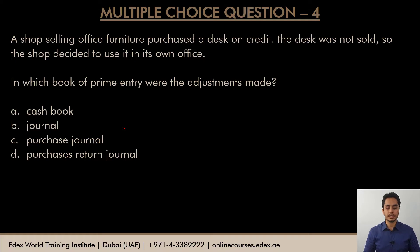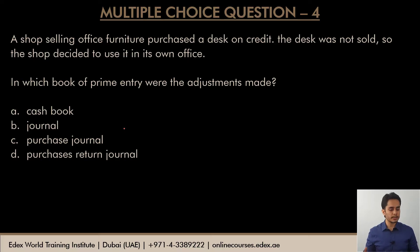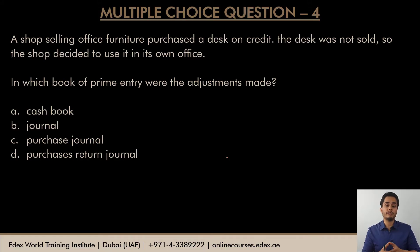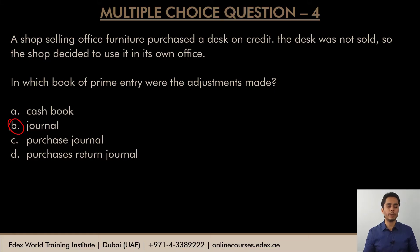A shop selling office furniture purchased a desk on credit. The desk was not sold, so the shop decided to use it in its own office. It was purchased assuming the goods would be sold to customers but ultimately it was used for own purposes. In which book of prime entry were the adjustments made? When the furniture was originally purchased thinking it would be sold, the entry would have been made in the purchase journal. But when it was used as an asset in the business, journal entries would have been used to make the adjustment — removing the amount from the purchase account to the asset account. Hence B is the correct option. Cash book is only used when cash and bank entries are involved; purchase returns journal is when goods are returned to the supplier.